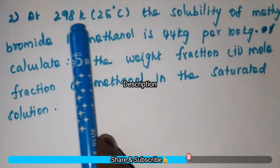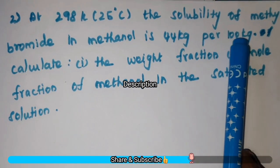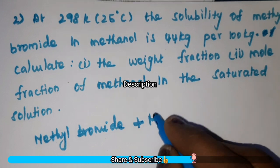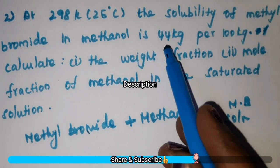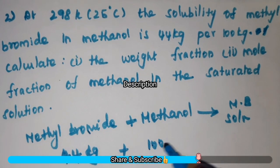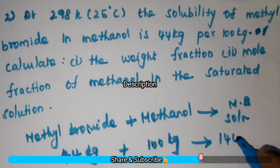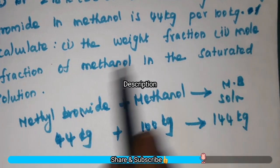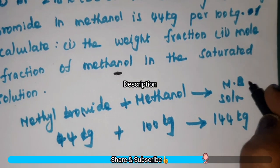Problem number 2: at 298 Kelvin (25°C), the solubility of methyl bromide in methanol is 44 kg per 100 kg. That is, we are going to solubilize methyl bromide in methanol. The weight of methyl bromide is 44 kg and weight of methanol is 100 kg, so the weight of the solution is 144 kg. They are asking to calculate the weight fraction and mole fraction of methanol in the saturated solution.